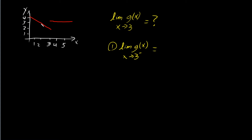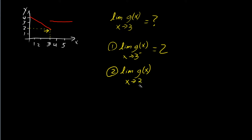As we come towards 3 from the left, the function approaches a value of around 2. So the left-hand limit equals 2. Now for the second step — what is the limit of g of x as x approaches 3 from the right? Starting from the right and moving towards x equals 3, we can see that the function value here is equal to 3.